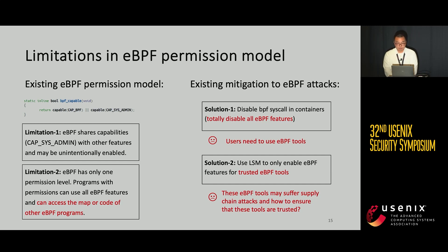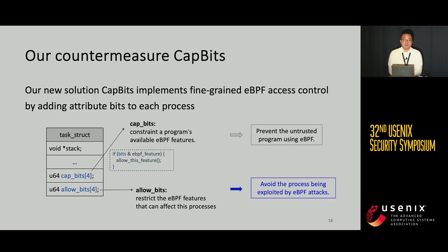The existing mitigations are also improper. The first solution is to disable the BPF syscall to disable all eBPF features, but people need to use eBPF tools. Another solution is to use LSM to allow only specific eBPF programs, but programs with eBPF permission can still launch attacks, and it's hard to distinguish which programs are trusted. Therefore, we propose a new mitigation called cap-bit, which implements fine-grained eBPF access control by adding an attribute bit to each process. By checking these bits, we can constrain the available eBPF features of a process and prevent other processes from using specific eBPF features, avoiding the target process being exploited by eBPF attackers.